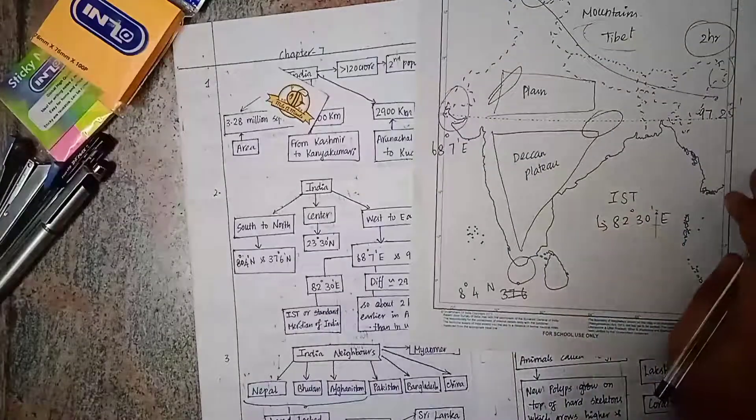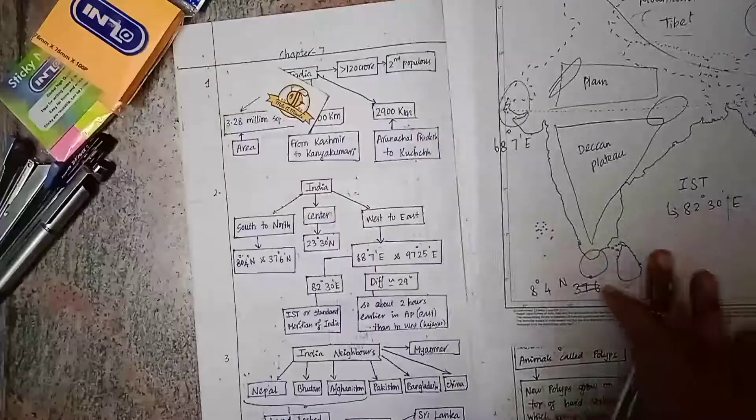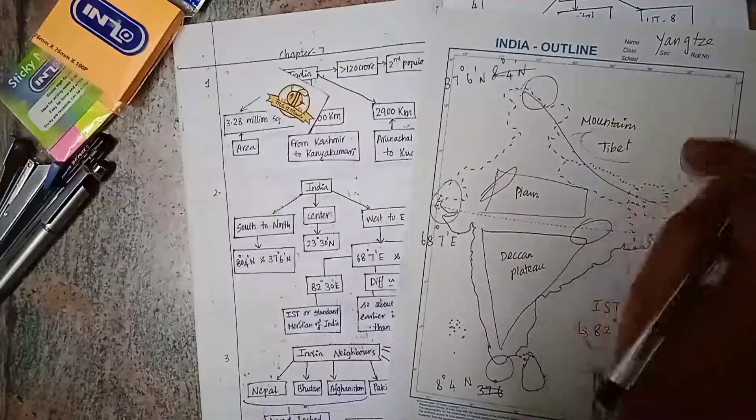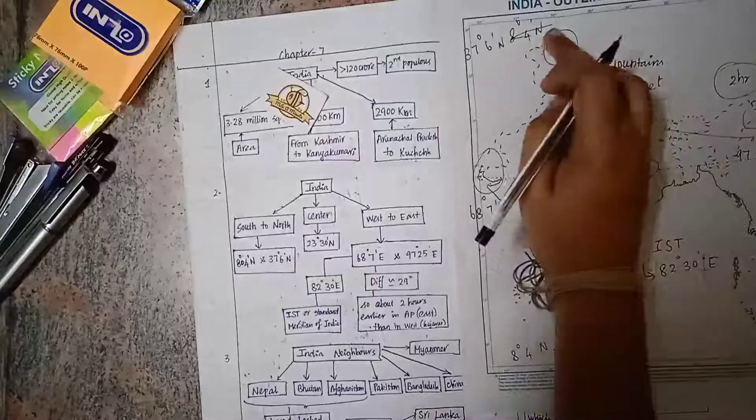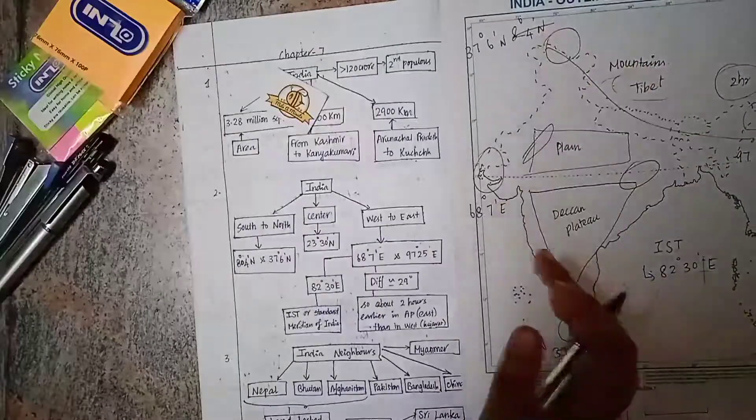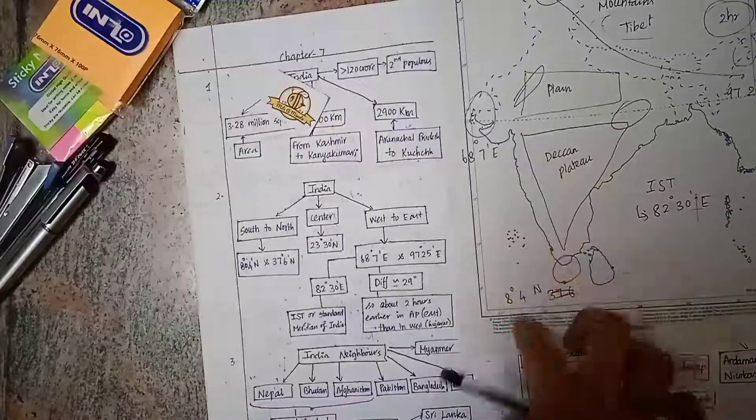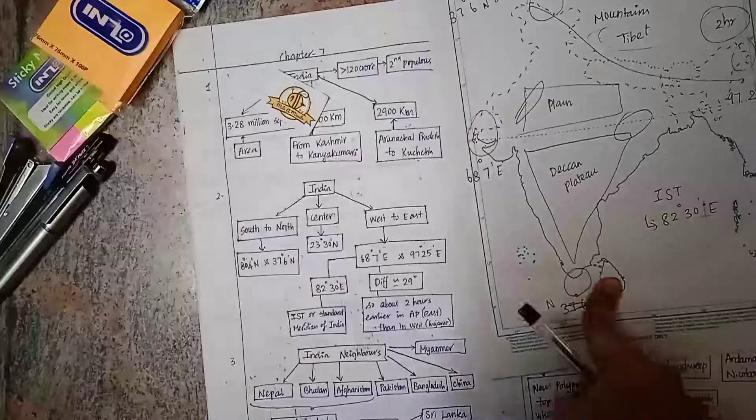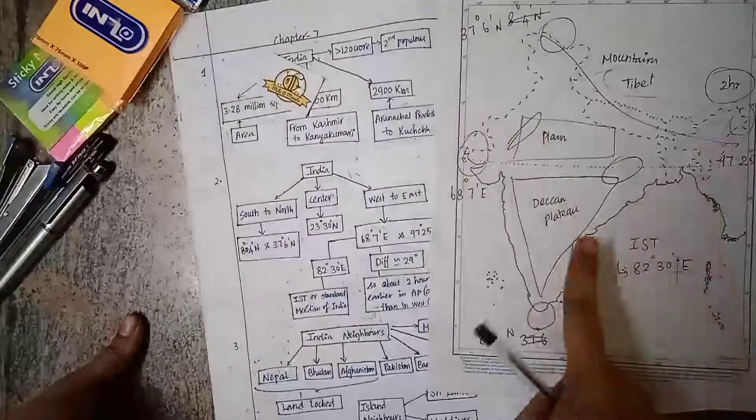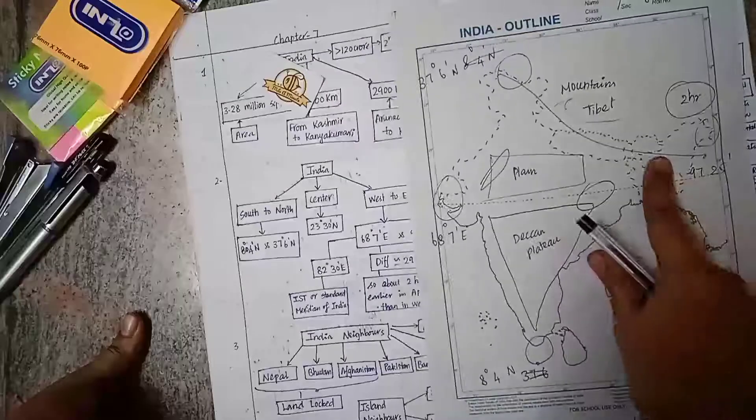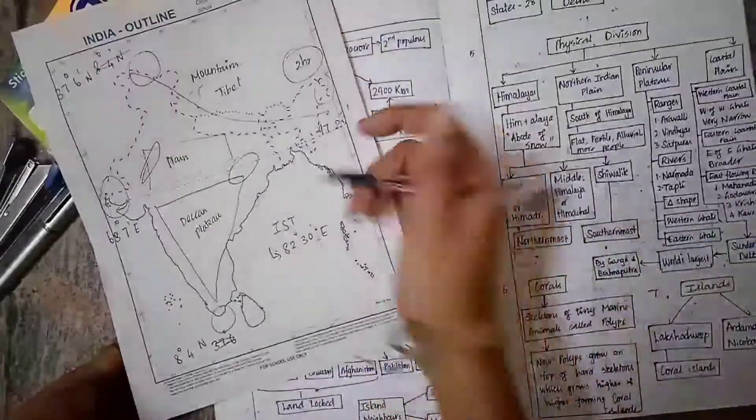The neighbors of India are Nepal, Bhutan, China, Pakistan, Afghanistan with a small border, Bangladesh, and Myanmar. We also have island neighbors: Maldives in this region and Sri Lanka. Among the neighboring countries, some neighbors are landlocked - for example, Nepal, Bhutan, and Afghanistan are landlocked neighbors.